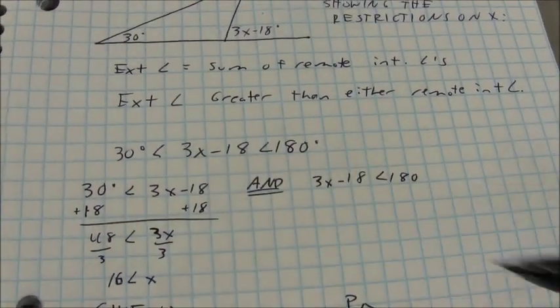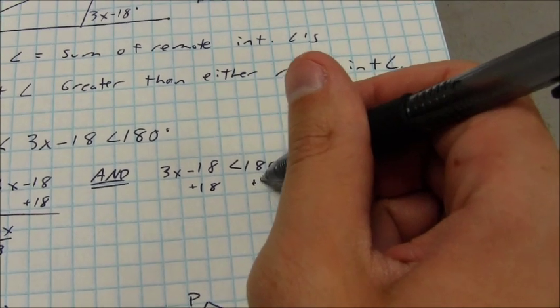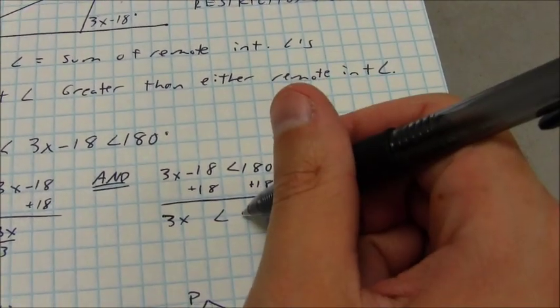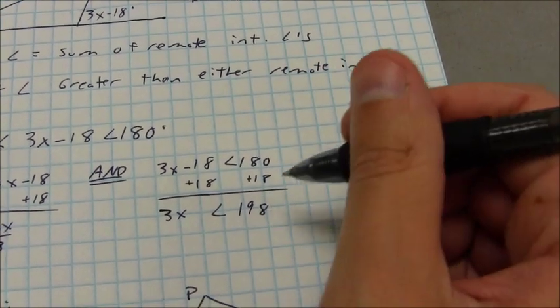There's a 6 there. And on the other side, I can add 18 to both sides. I find out that 3x is less than 198.